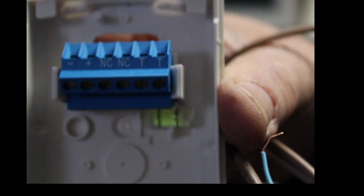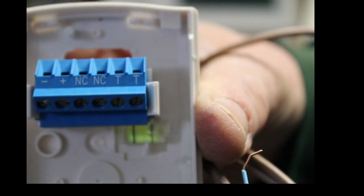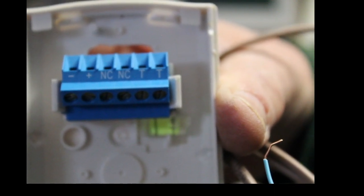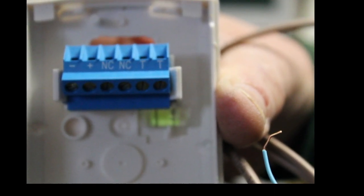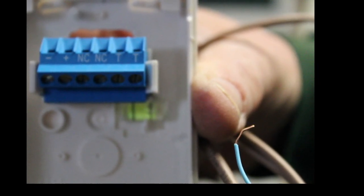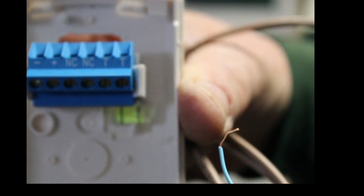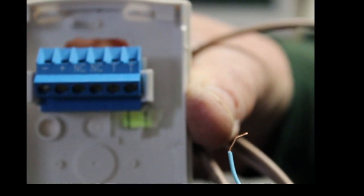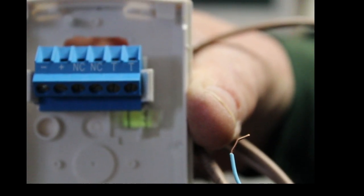And on this motion detector, the negative is going to be black. The positive is going to be red. And when it says NC-NC, that can be where your yellow and blue go. It doesn't matter where the yellow or where the blue goes, as long as your yellow and blue goes into the terminal marked NC, which is normally closed. The TT, don't worry about that. That's tamper.